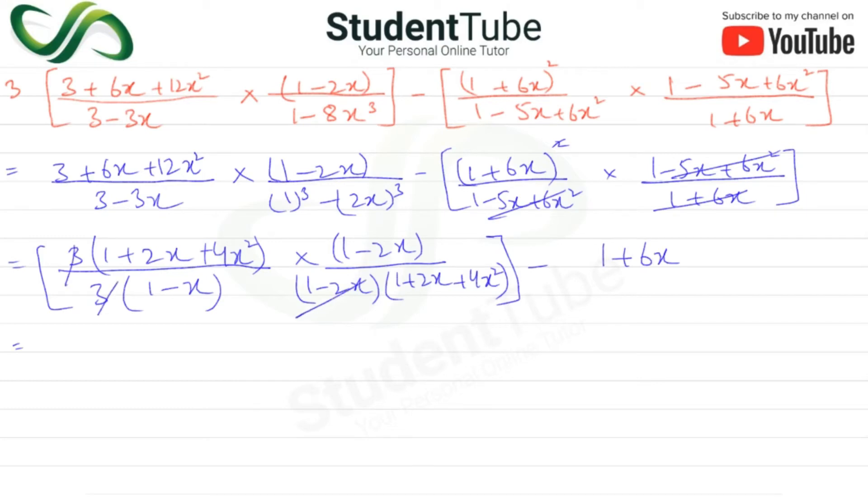Now 3 cancels, 1 minus 2x cancels, and this is also cut. So what have we got?